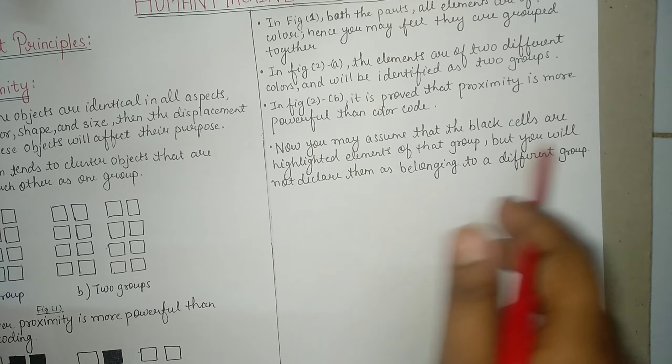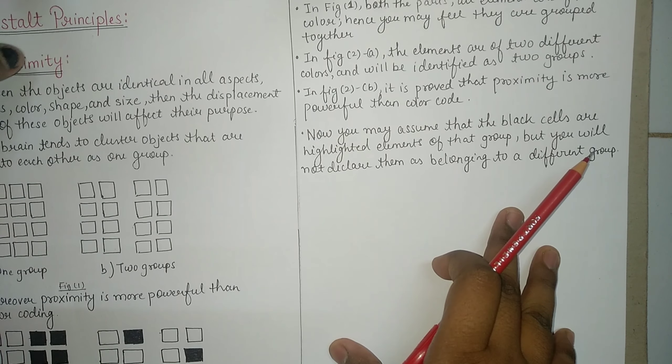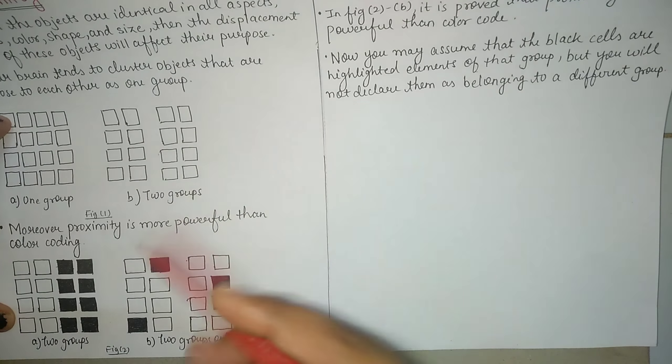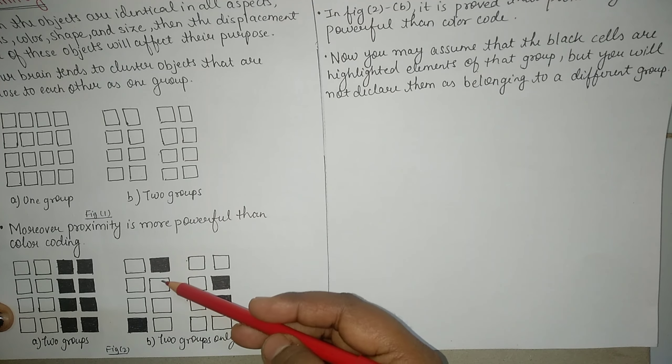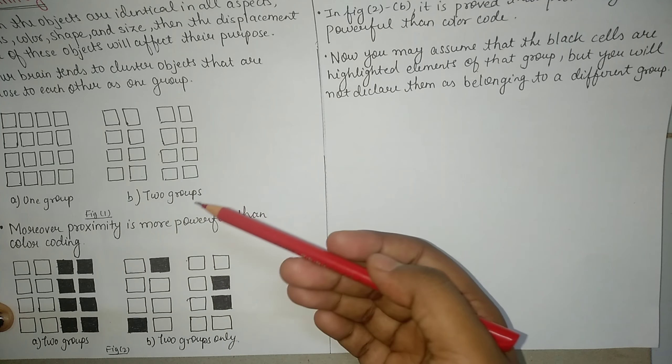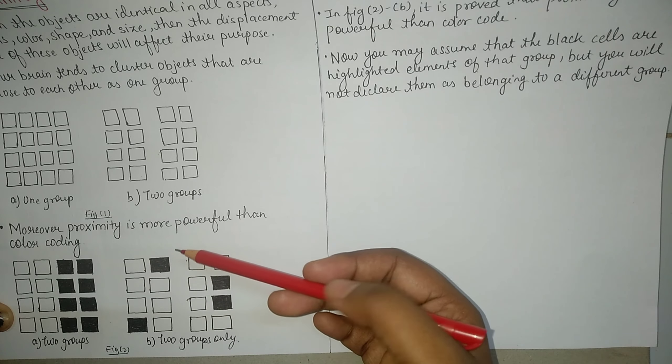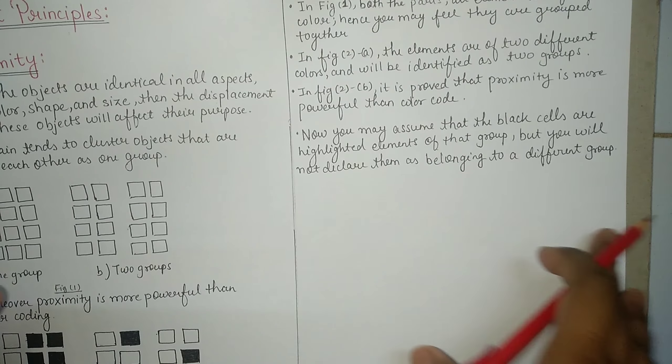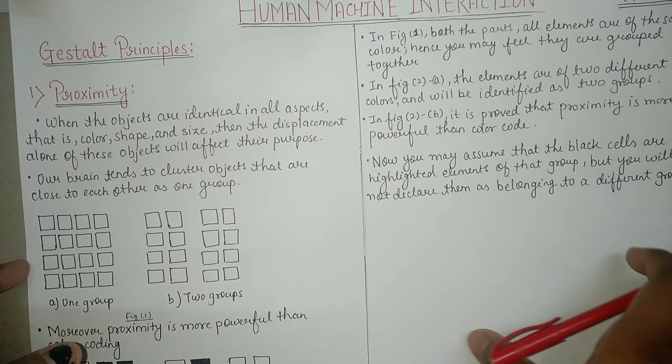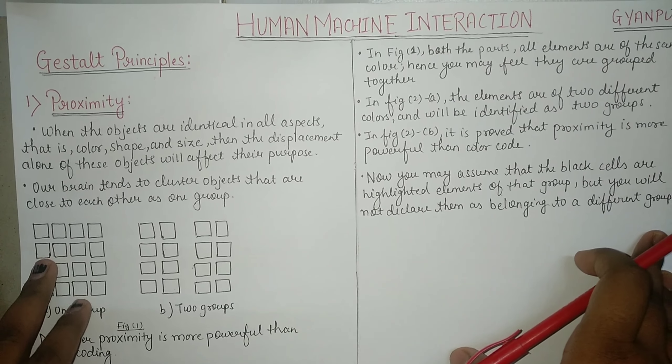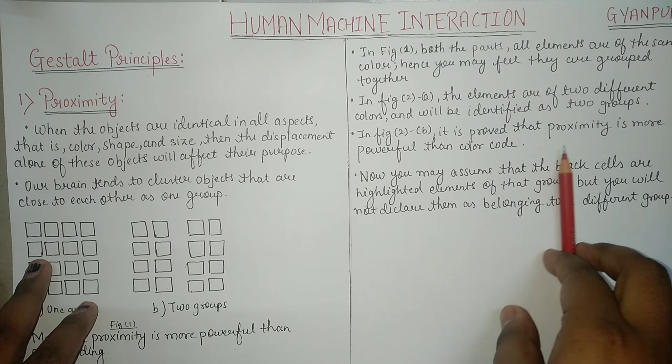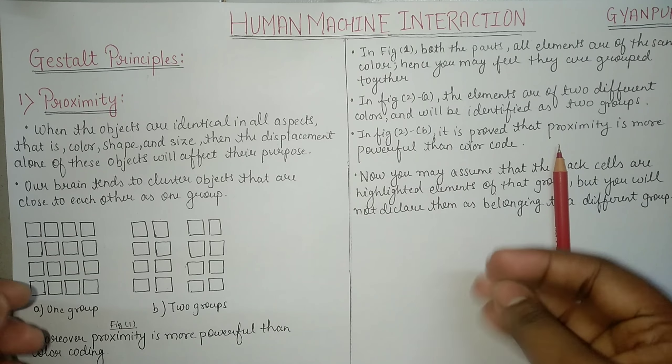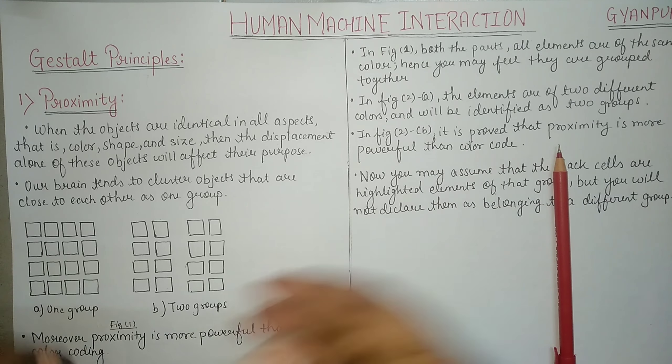So proximity is more powerful than color code. Now you may assume that the black cells are highlighted elements of their group, but you will not declare them as belonging to a different group. So we will assume these black cells as highlighted elements in one group. We will not assume that they are the different group and they belong to a different group. So that proves how proximity is more powerful than color coding, and this is our first Gestalt principle, that is proximity, how proximity changes user's vision, user perception.